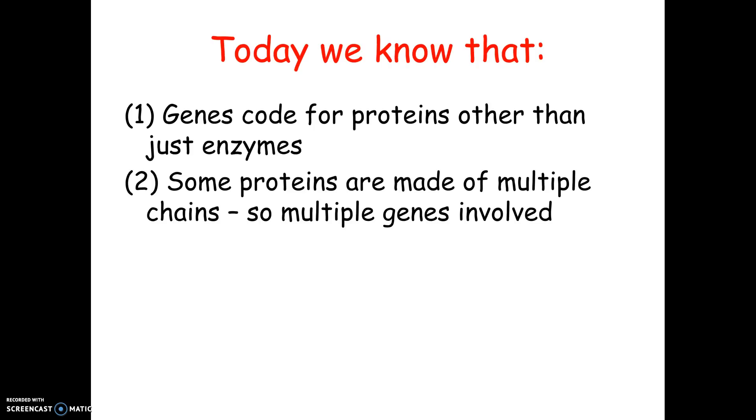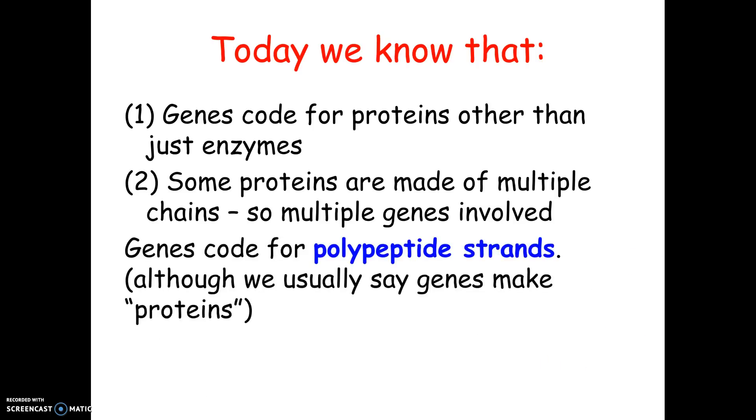Secondly, we now know today that some proteins, final proteins, like hemoglobin, for example, are made of multiple chains, like quaternary structure. You remember quaternary structure. So in a case like that, you might need multiple genes to code for the final protein. In other words, a gene doesn't necessarily code for the final protein if it's a quaternary one. It codes for one polypeptide chain. That's what a gene is. It is a code for one polypeptide chain, which then may be a protein in itself or may be part of a larger quaternary structure protein. So that's what a gene really is. And that's our last experiment, by the way.